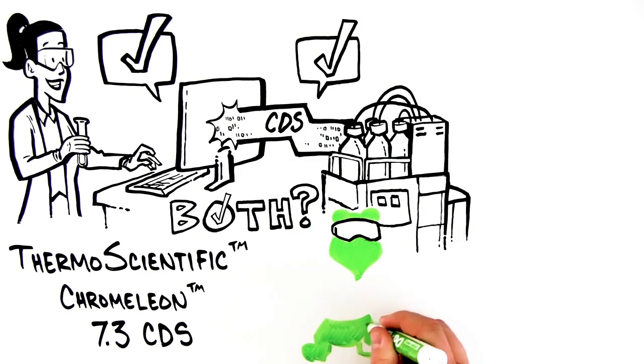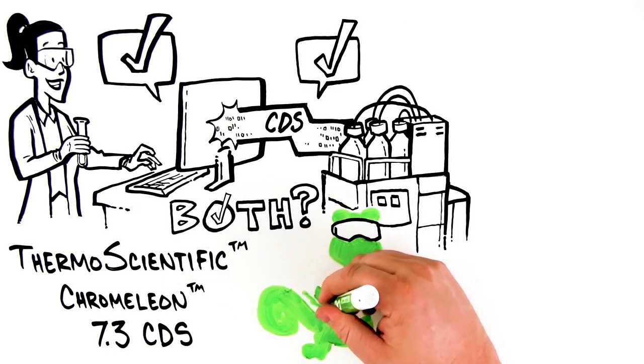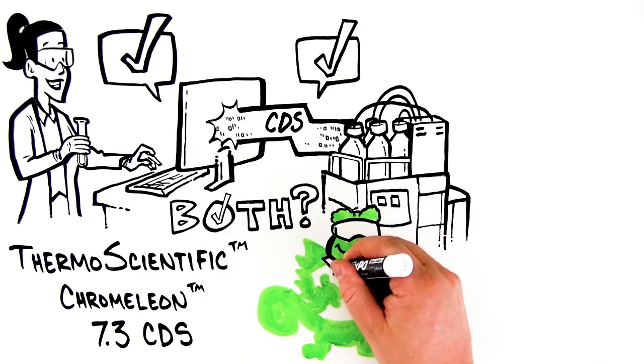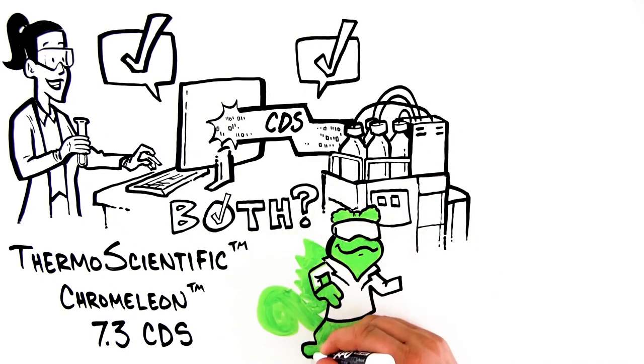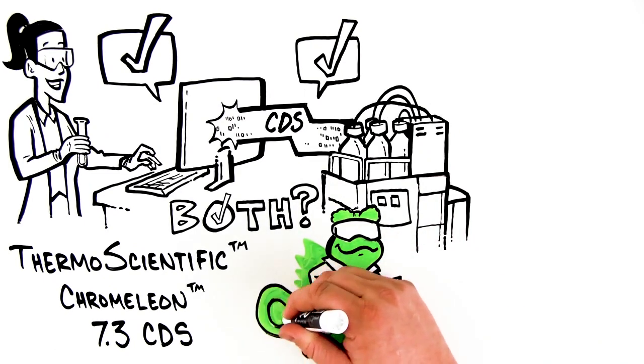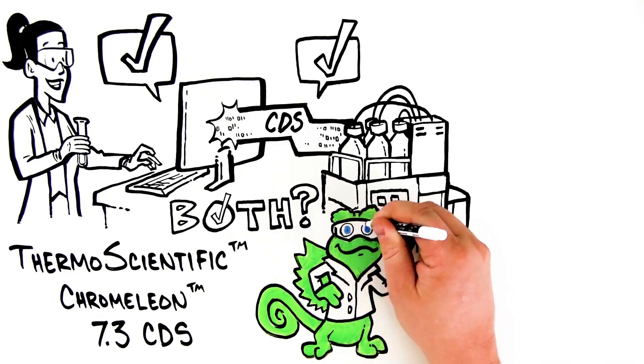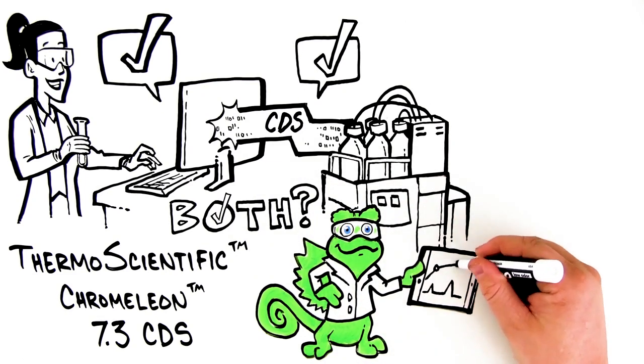Chromeleon 7.3 software is the CDS solution that bridges the divide between the needs of IT and the lab, offering better spend efficiency and easier, complete compliance, plus increased efficiency.